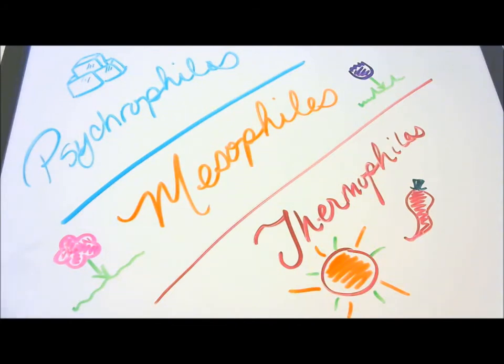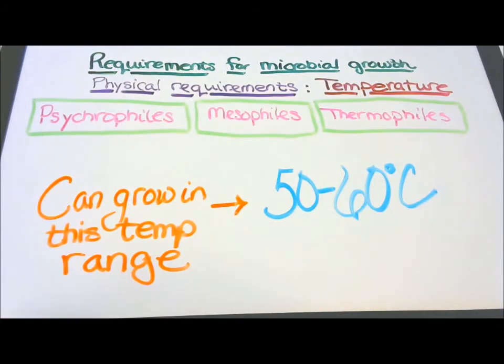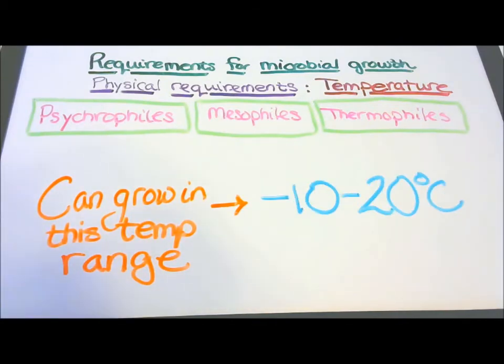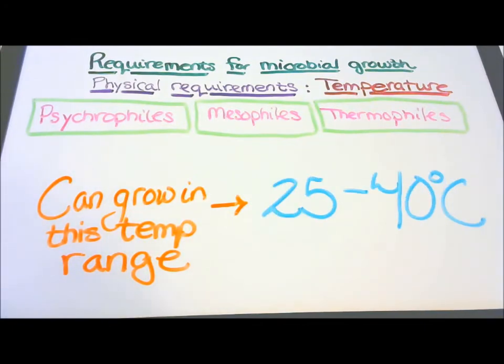Which major file group can grow in this temperature range 50 degrees to 60 degrees Celsius? Psychrophiles, mesophiles, or thermophiles? Which major file group can grow in this temperature range negative 10 to 20 degrees Celsius? Last one, which file group can grow in this temperature range 25 degrees Celsius to 40 degrees Celsius? Psychrophiles, mesophiles, or thermophiles?